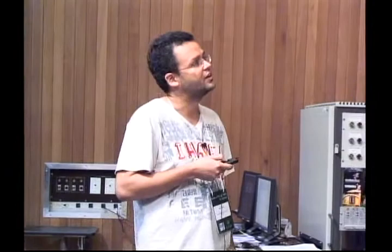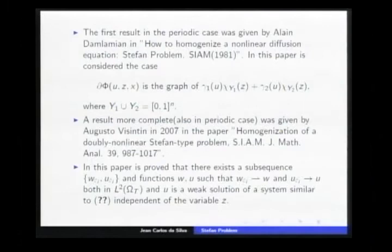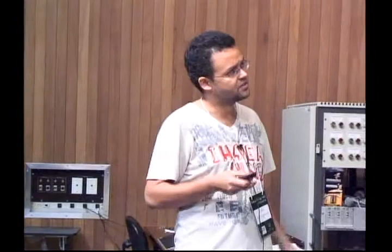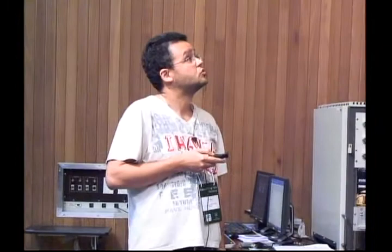A more complete result, also in the periodic case, was given by Augusto Vicentino in 2007, where he proved that the sequence of weak solutions U-epsilon strongly converged to a function U that satisfies a similar system depending on z. When you see that problem in a more general setting, you note that his method is strongly based on the equivalence between Lp convergence and Lp convergence, and this equivalence only happens in the periodic case. Here, I'll present an extension of his results to a more general ergodic algebra.